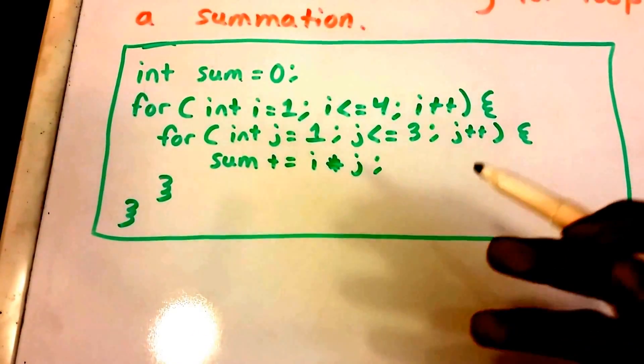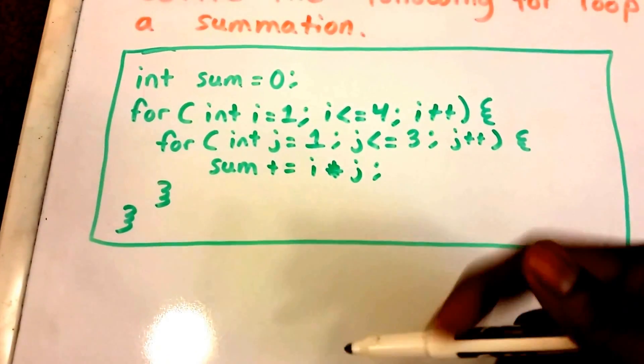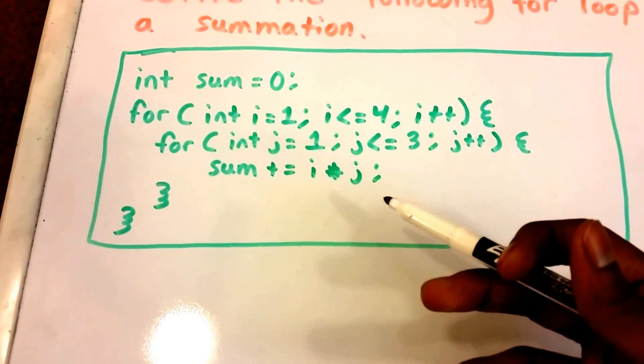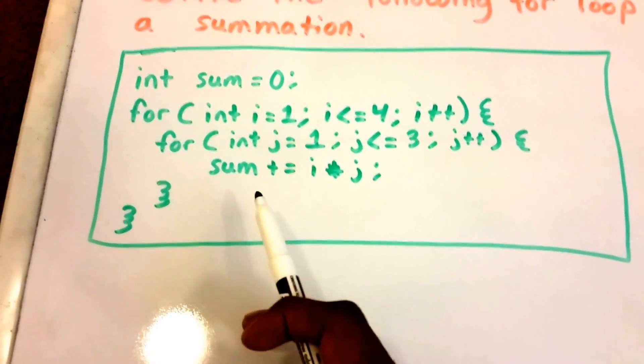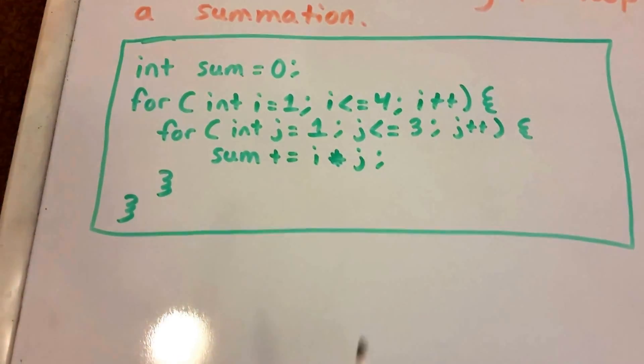So hopefully that's not too confusing, but anyways let's go ahead and get started. We're going to write these two for loops as summations, and then we're going to solve for what the value of sum will be after the program runs.